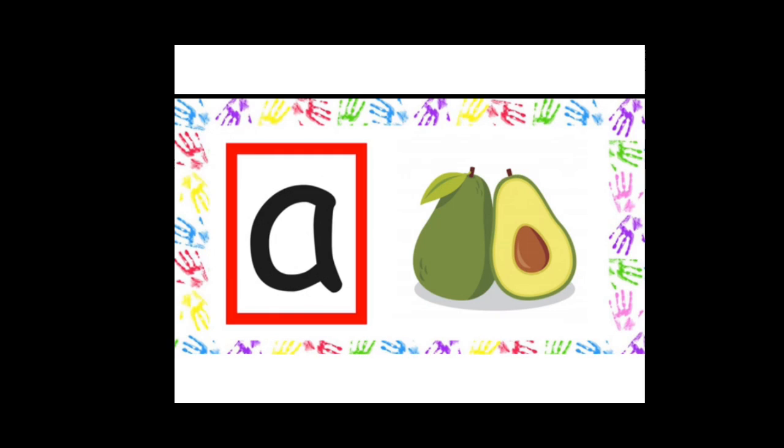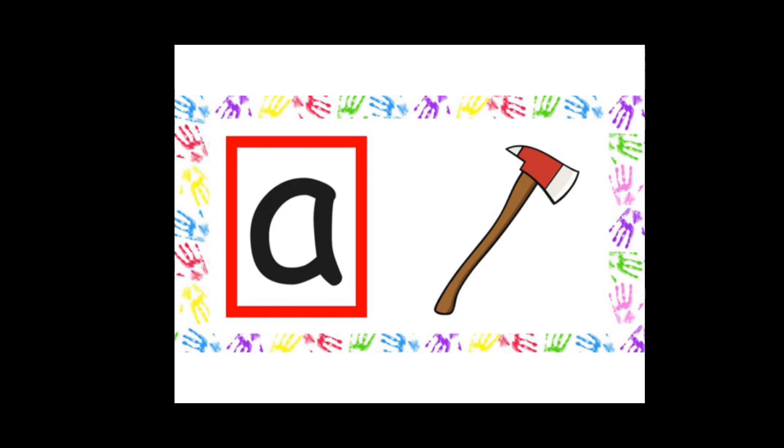The next one is A, apricot, and the last one is A, axe, A, axe. These are things that start with letter A.